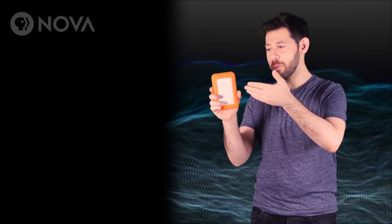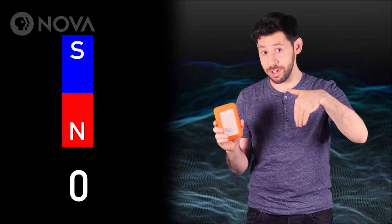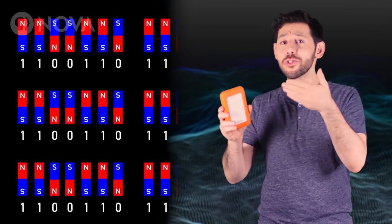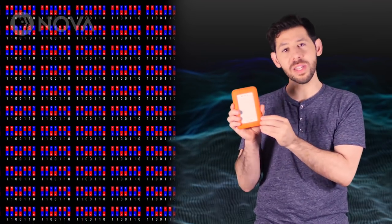So in a hard drive, we have small magnets whose north poles point up for one or down for zero. There are actually several trillion magnetic switches in here. But why aren't hard drives even smaller?